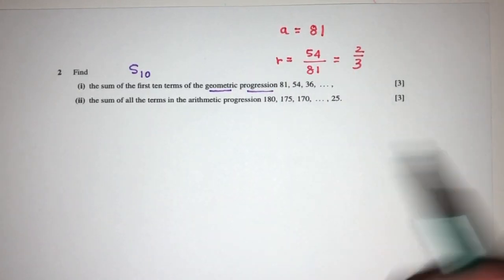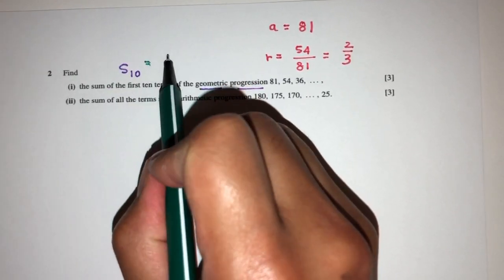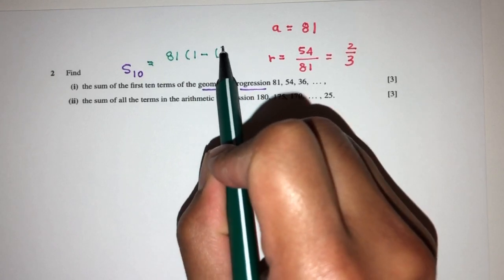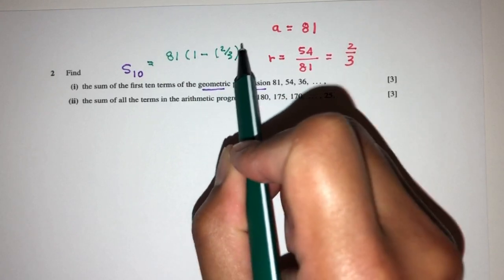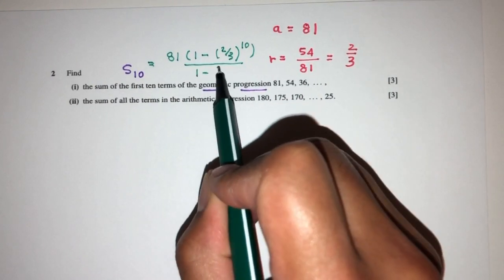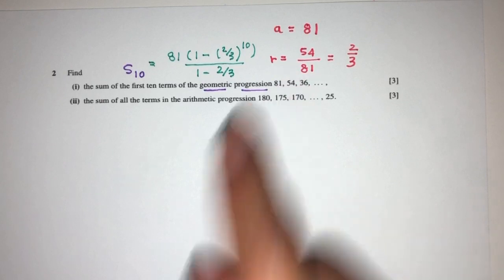So now we can use this to find the value of the sum of the first 10 term. That should be A, which is 81, times 1 minus R, which is 2 over 3, power n, which is 10, over the value of 1 minus R, which is 2 over 3. Again, this is a formula given to you on your list. You don't need to memorize that. However, you need to know how to find the value of R.